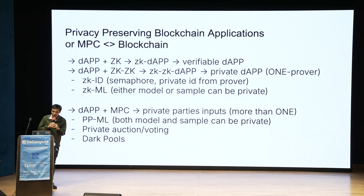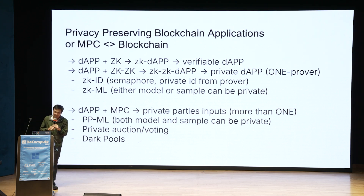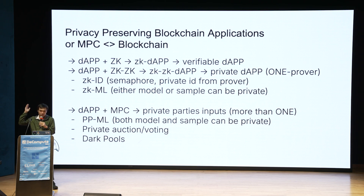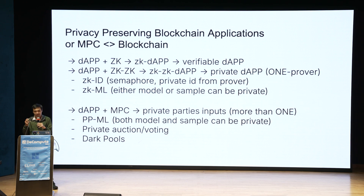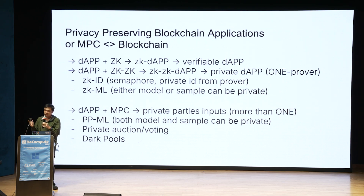There are several applications for this. You have ZKID — a prominent example is Semaphore by the PSE — for privacy-preserving identity from the prover. You can also do ZKML, but in this case you can only have either the model or the sample staying private, you cannot have both.